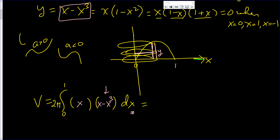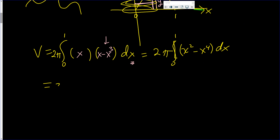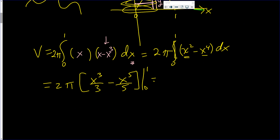Now we just have to integrate. There's 2π times the integral from zero to one. Let's distribute before we integrate. So we have 2π times the integral of x² minus x⁴. The integral of x² gives x³/3, and the integral of x⁴ gives x⁵/5, evaluated from zero to one.